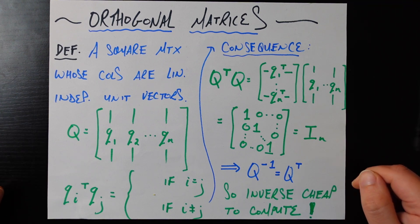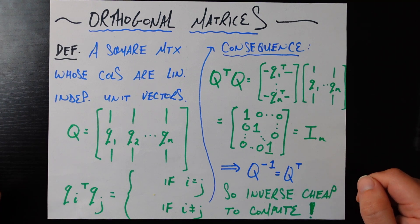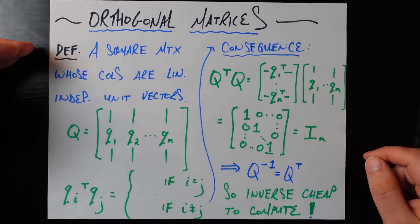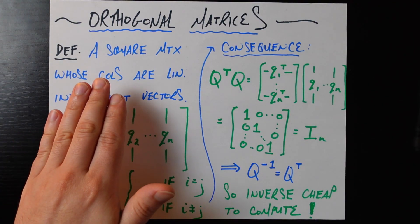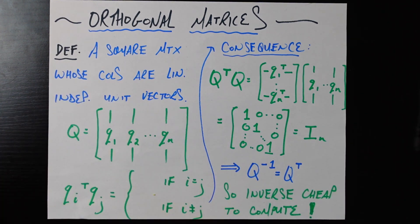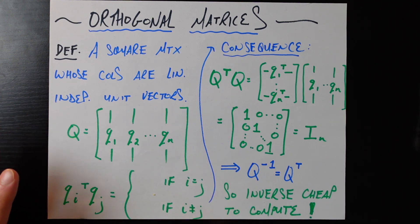We're going to start with the definition and then work our way through what this definition entails, its consequences, and eventually an actual application in principal component analysis, which we often use to reduce the dimensionality of a data set — to reduce the feature space. So first the definition: a square matrix — this is a subset of square matrices — whose columns, or rows (it applies to both, but we'll stick to columns for simplicity), are linearly independent unit vectors.